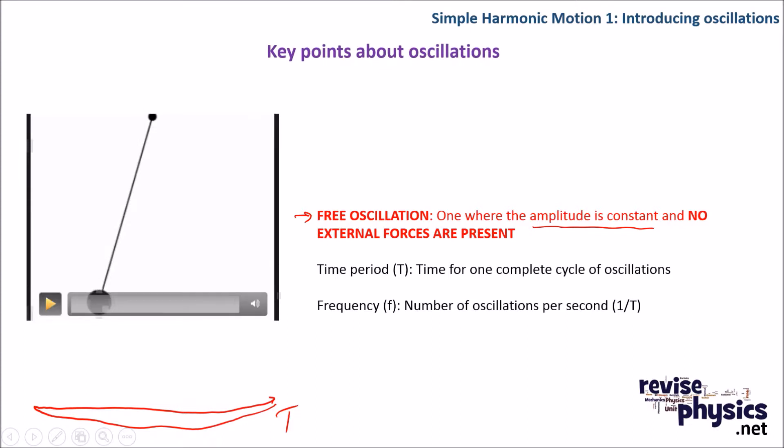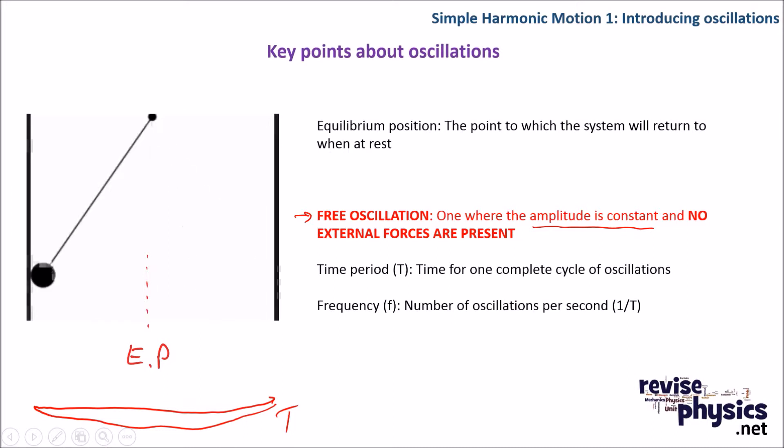Now when we look at this video, there's a couple of extra points we need to bring in. The point to which the system would come to rest if you were to leave it is the equilibrium position. And the point of maximum displacement is our amplitude. Now we usually say displacement is x, and we could have a range of different displacements depending on the time at which we are measuring it, but the maximum displacement is always the amplitude.